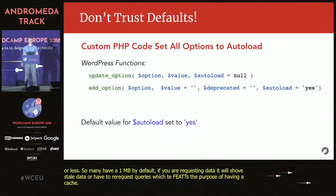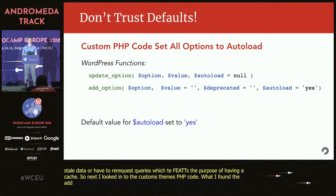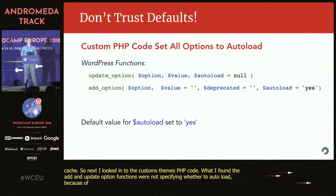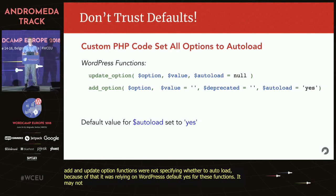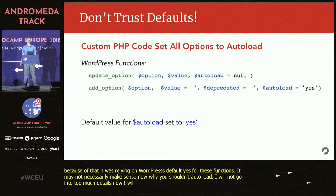Next I looked into the custom theme's PHP code. What I found was that the add_option and update_option functions weren't specifying whether or not to autoload. Because of that, it was relying upon WordPress's default, which is yes for these functions. I won't go into too much detail now, but I'll come back and explain why you might not want to autoload all the options in your options table.